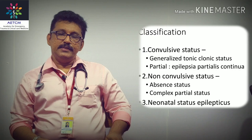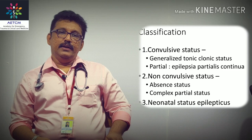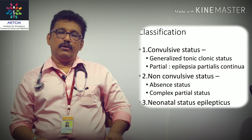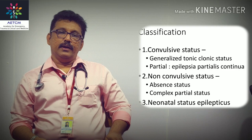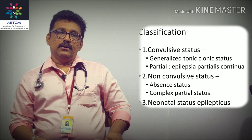Status epilepticus is classified into three major categories: convulsive status, non-convulsive status, and neonatal status epilepticus. Convulsive status is further classified into generalized tonic-clonic status (GTCS) and partial epilepsy occurring continuously, called epilepsia partialis continua. Non-convulsive status includes absence status and complex partial status.